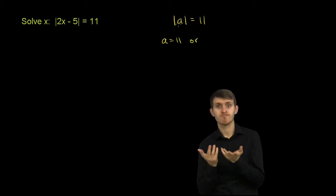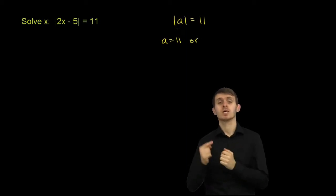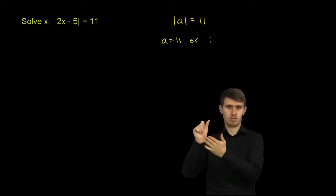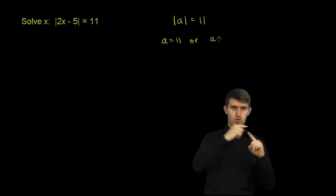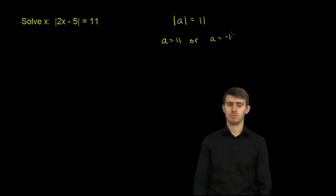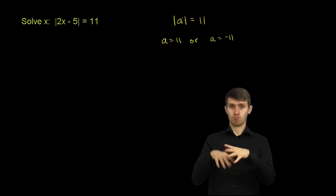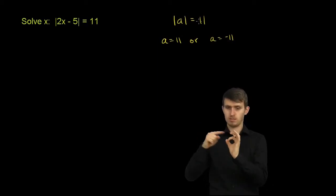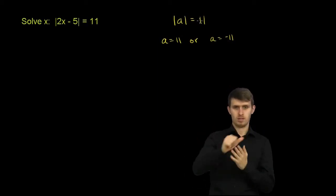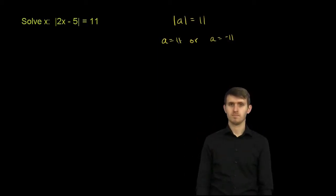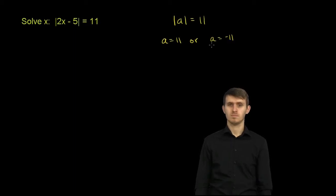Or what else could a be? It could be negative 11 — a could be equal to negative 11 — because there are two possible values of a that are exactly 11 away from 0. It could be positive 11, or it could be negative 11.